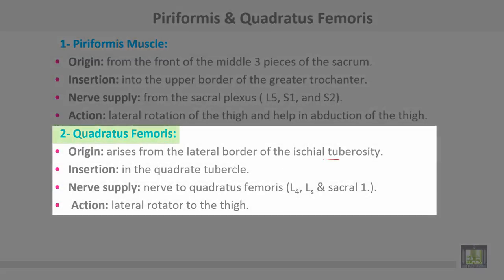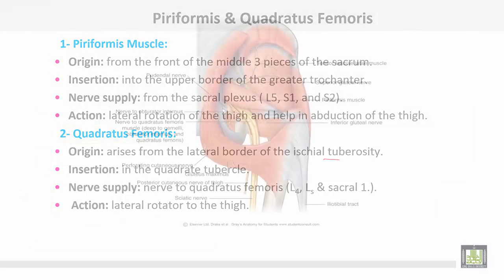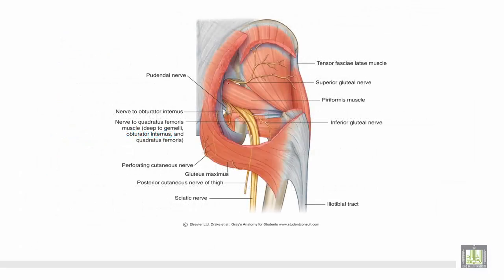Quadratus femoris muscle takes origin from the lateral border of the ischial tuberosity, inserted into the quadrate tubercle of the femur. Nerve supply: nerve to quadratus femoris from L4, L5, and S1. Action: lateral rotation of the thigh. This is the piriformis muscle and this is the quadratus femoris muscle.